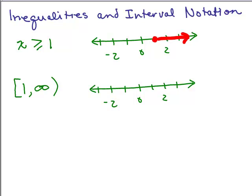How would I graph this using interval notation? Since it goes infinitely to the right and the smallest number is 1, at 1 we put the bracket opening to the right, and then draw an arrow going to the right. So this is a way of showing x is greater than or equal to 1 using interval notation.